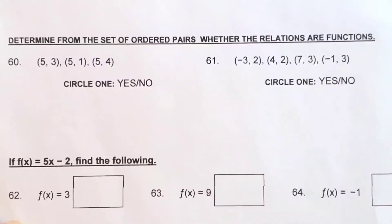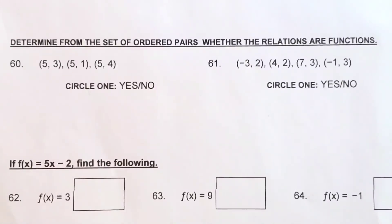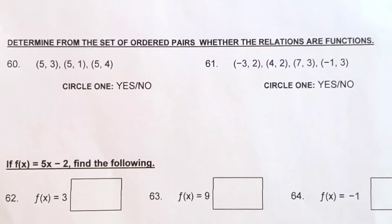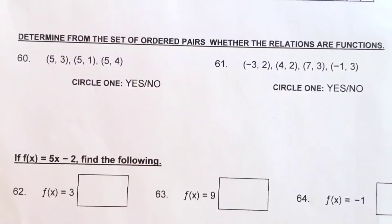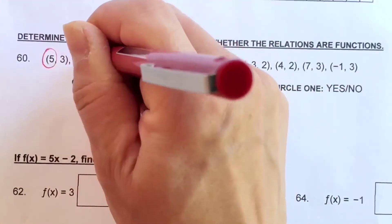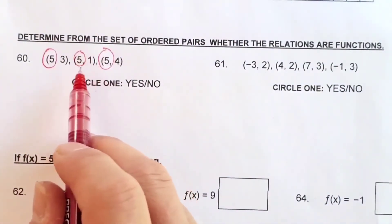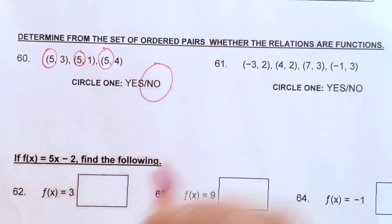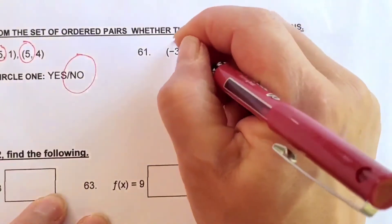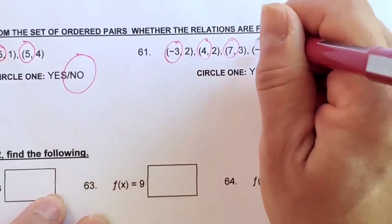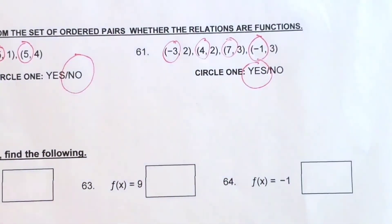Numbers 60 and 61: determine from the set of ordered pairs whether the relations are functions. Remember, a function cannot have two of the same x-coordinates. Circling the x-coordinates — both are 5, so no, it is not a function. For the other set: x-coordinates are negative 3, 4, 7, and negative 1 — all unique, none the same. So yes, it is a function.